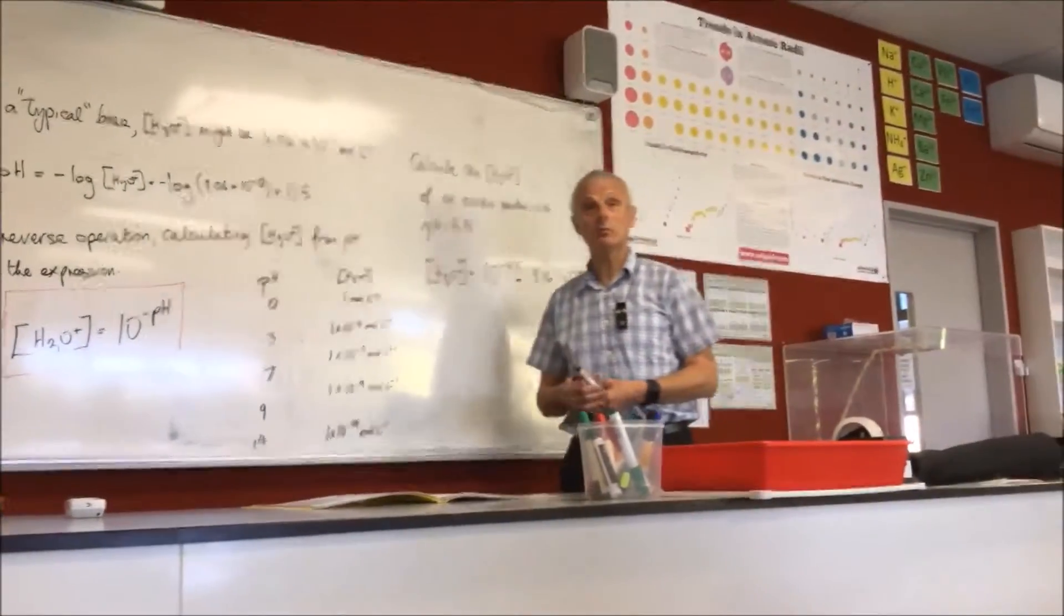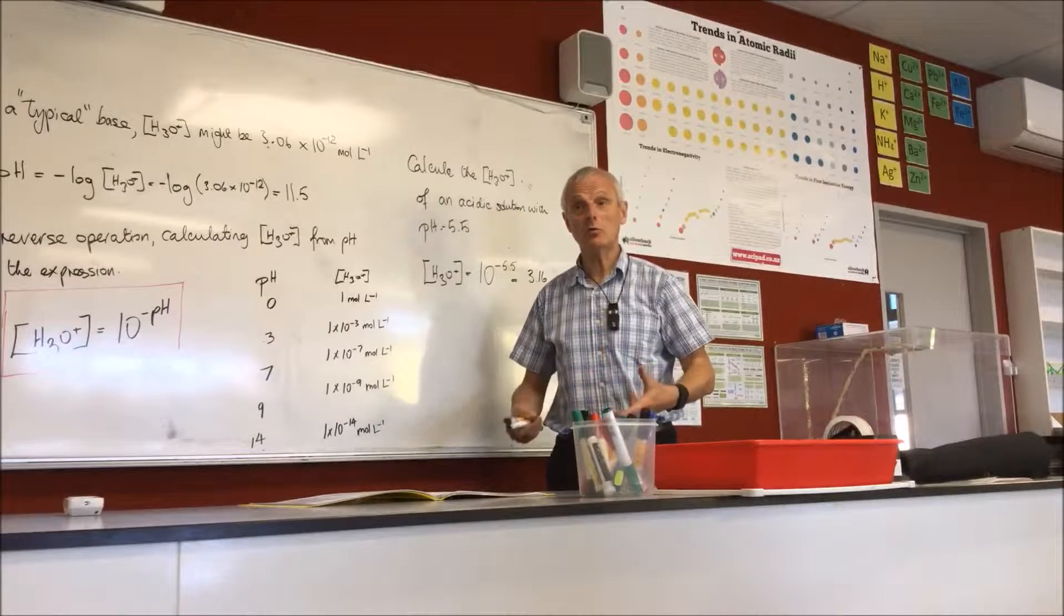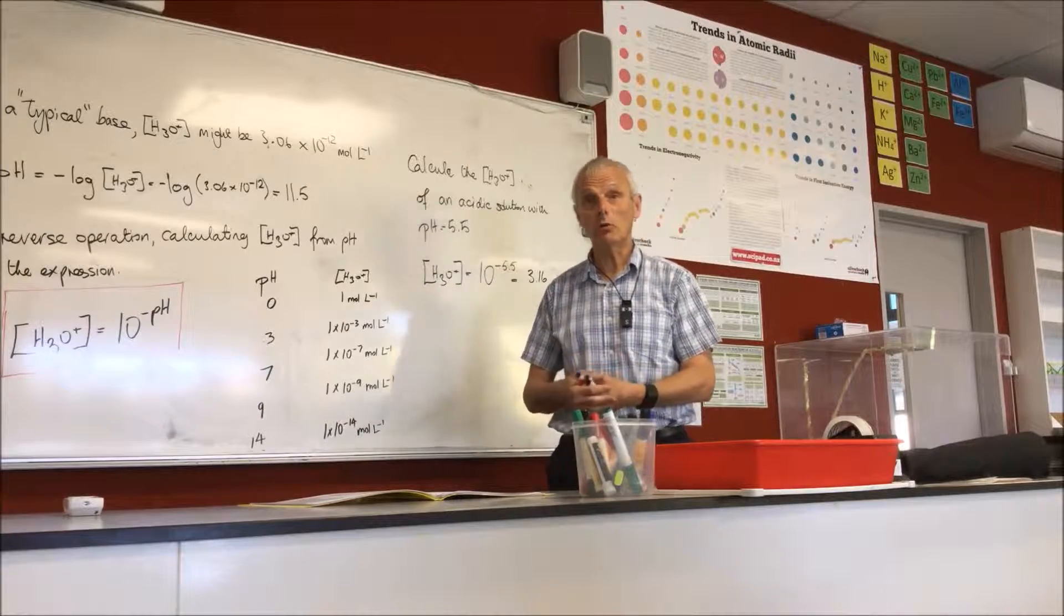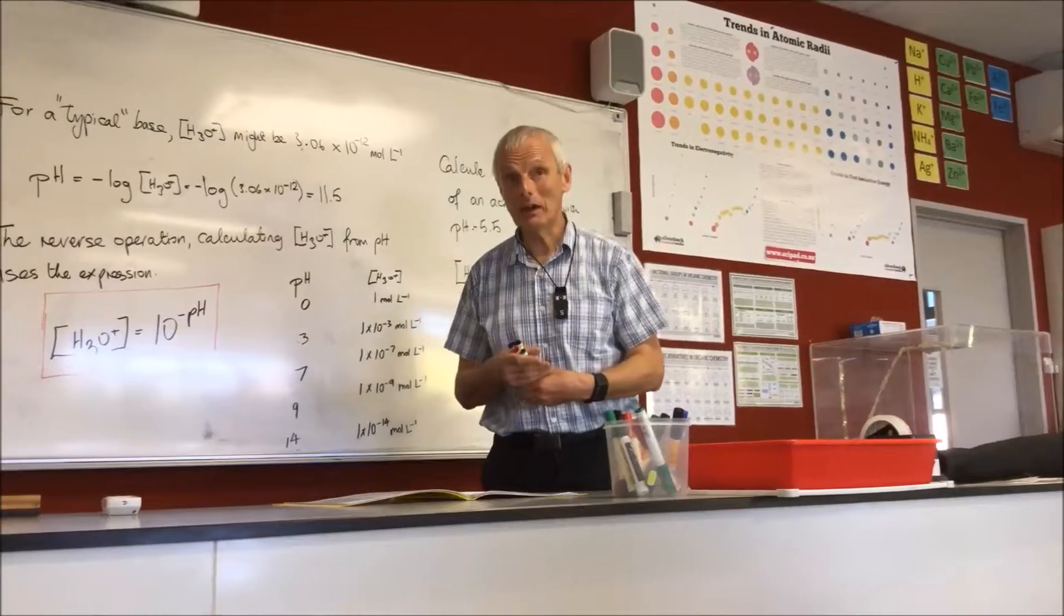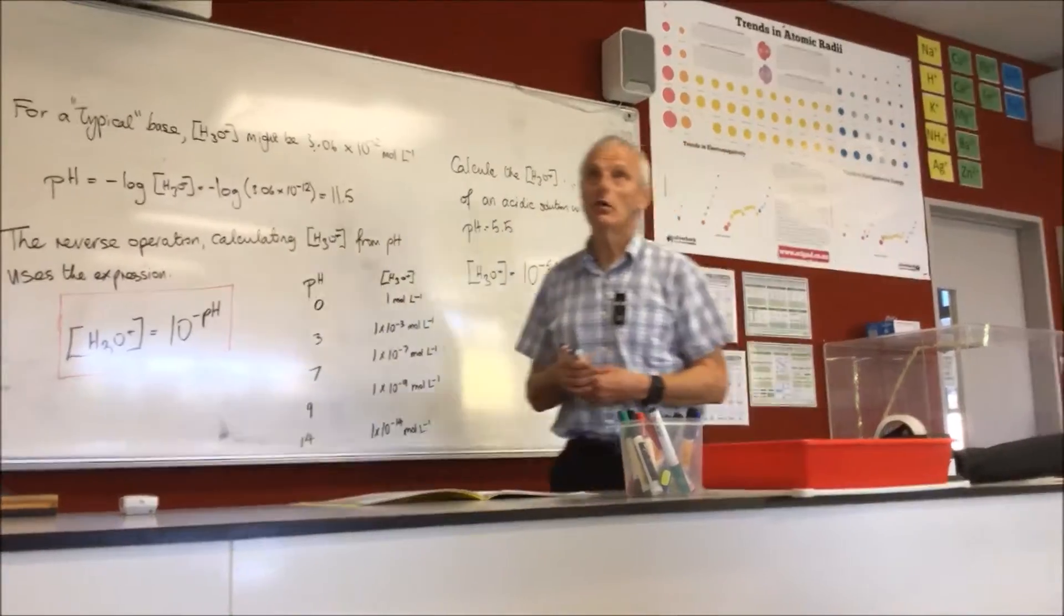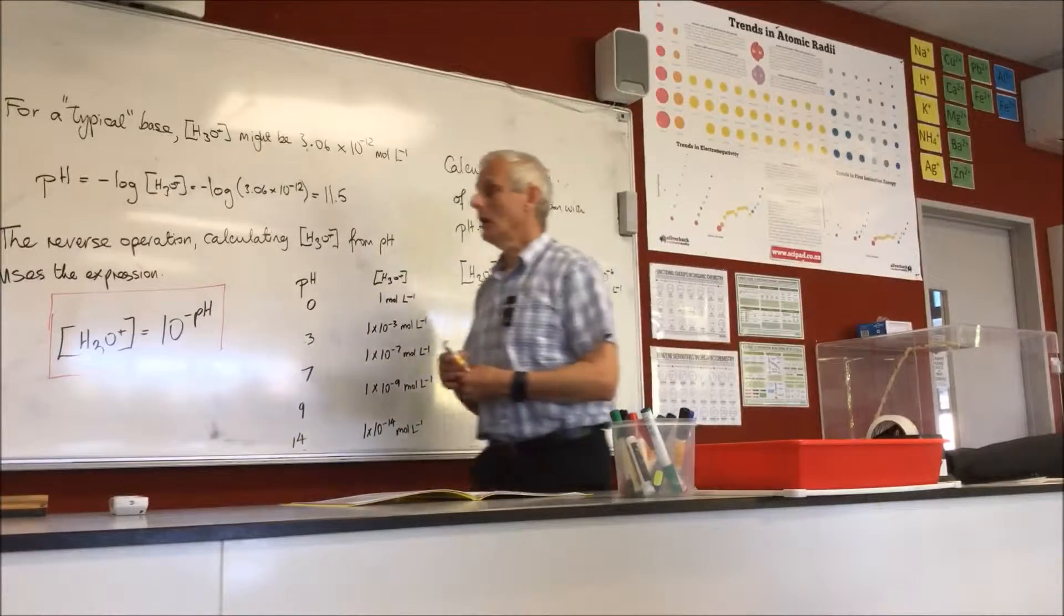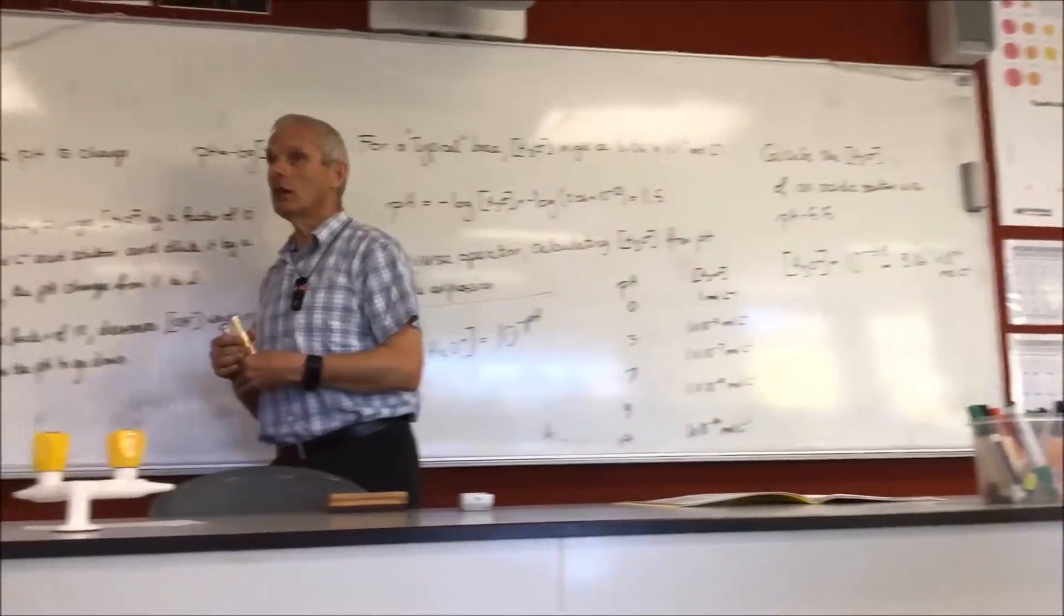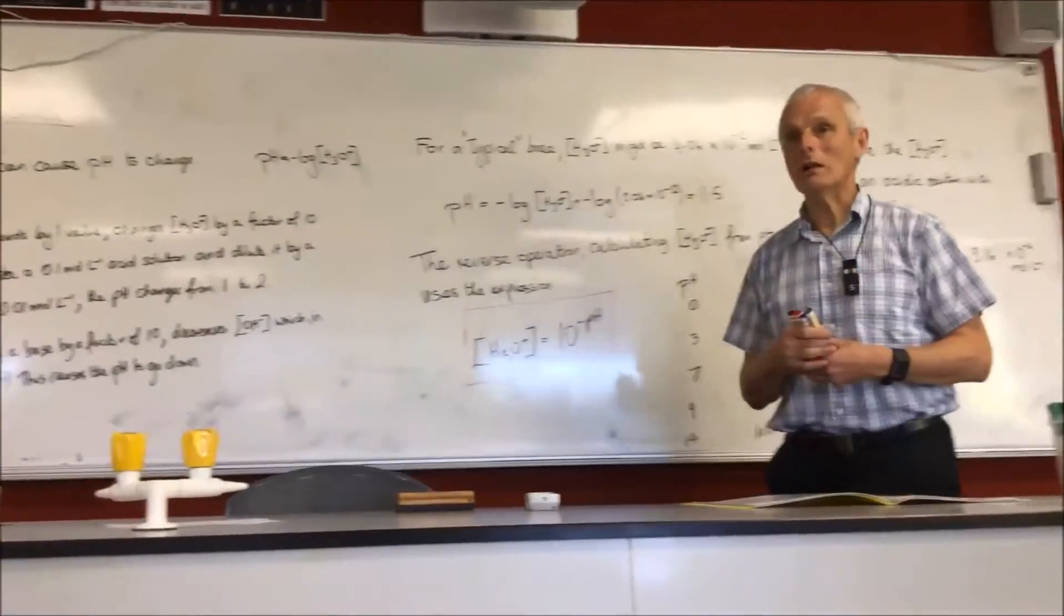When I say a factor of ten, I mean it's being diluted tenfold. So if you add a 0.1 mole per litre base, that actually has a pH of, I think it's 13. And if you dilute that by a factor of ten, it'll actually go down to 12.